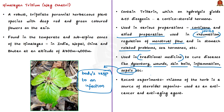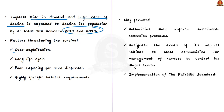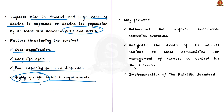Recent experiments have shown that the rhizome of the herb is a source of steroidal saponins, which can be used as an anti-cancer and anti-aging agent. This discovery has further increased its market value, leading to more poaching and illegal trade. The herb is sold at 3,500 to around 23,000 rupees per kilogram. This rise in demand is expected to lower its population by at least 50% between 2010 and 2079. Factors threatening its survival include over-exploitation, a long life cycle requiring more time to reach reproductive maturity, poor capacity for seed dispersal, highly specific habitat requirements, and high trade value with increasing market demand.